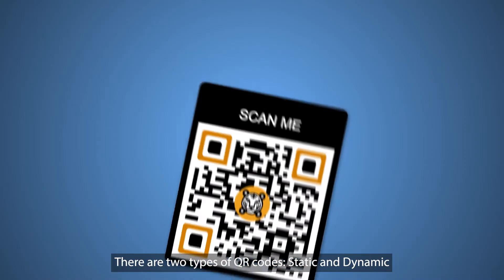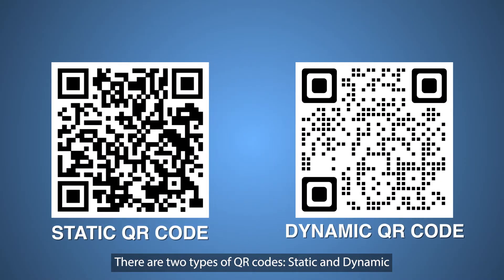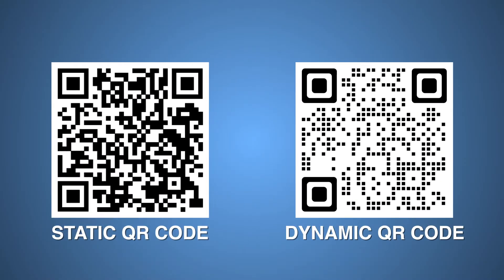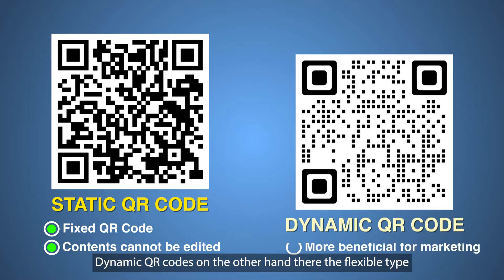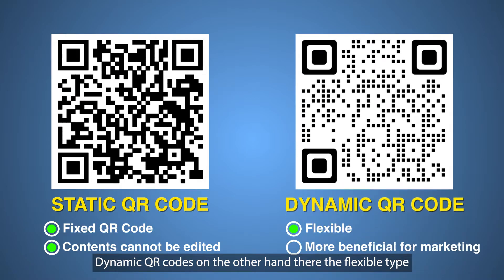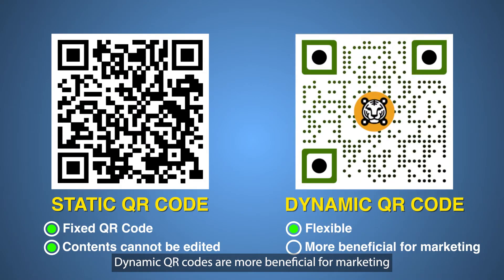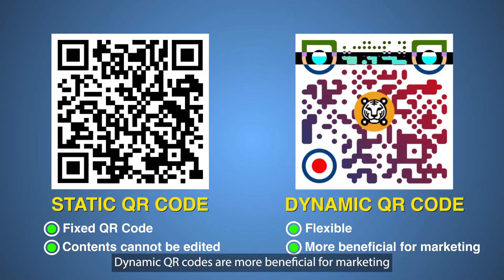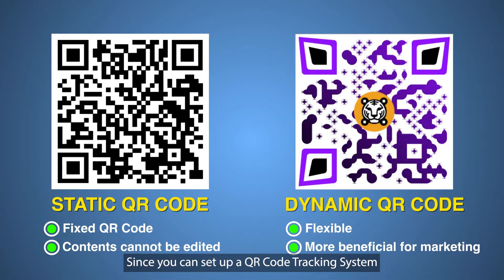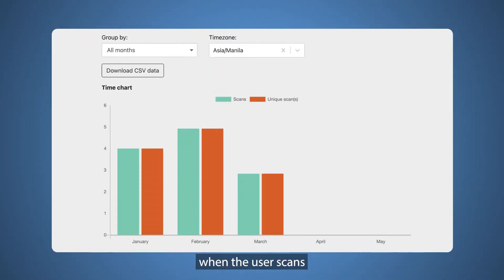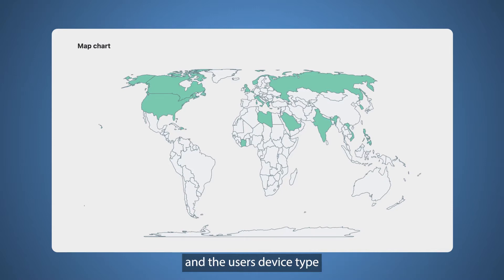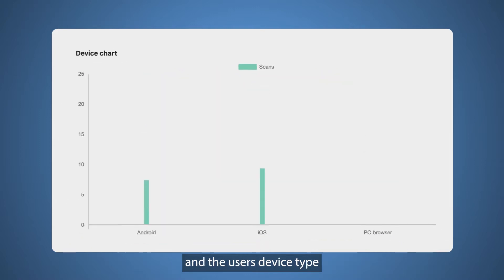There are two types of QR codes: static and dynamic. Static QR codes are fixed and their contents cannot be edited. Dynamic QR codes, on the other hand, are the flexible type. Dynamic QR codes are more beneficial for marketing, since you can set up a QR code tracking system to track the number of scans, when the user scans, the location where they scan, and the user's device type.